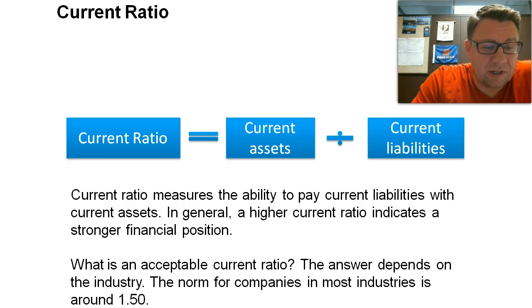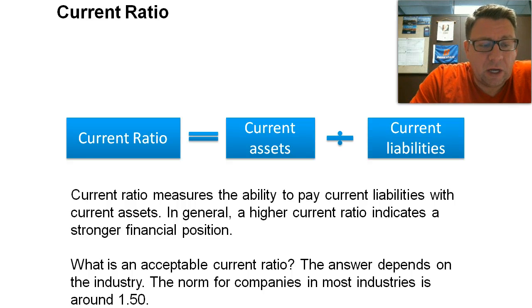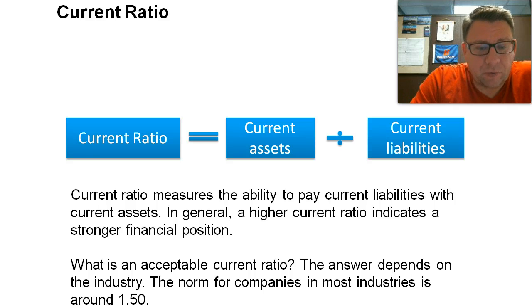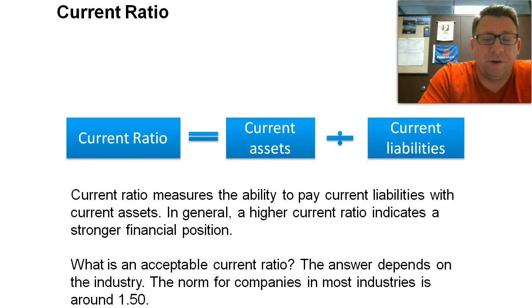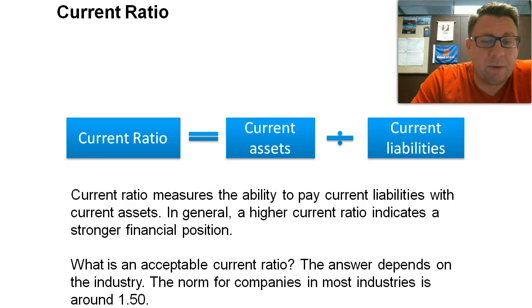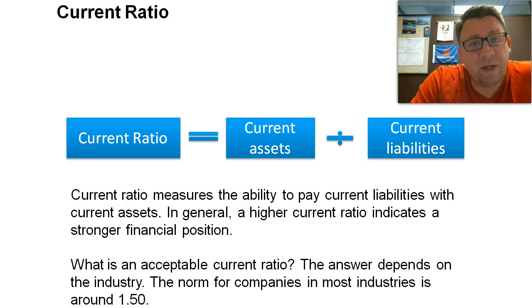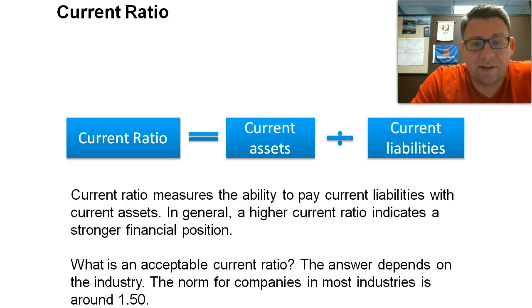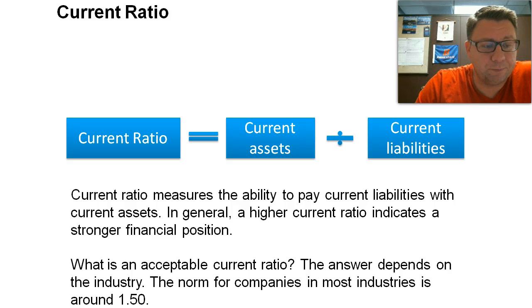What is an acceptable ratio? It depends on the industry. Most industries are about 1.5. I would say the minimum we'd like this to be greater than 1, meaning that we have more current assets than current liabilities.